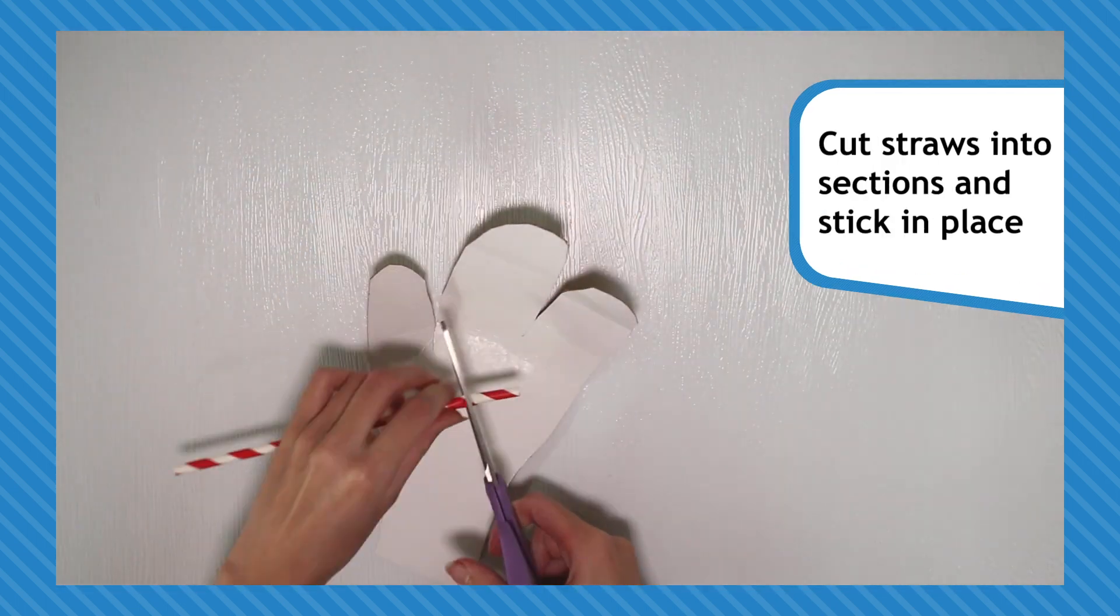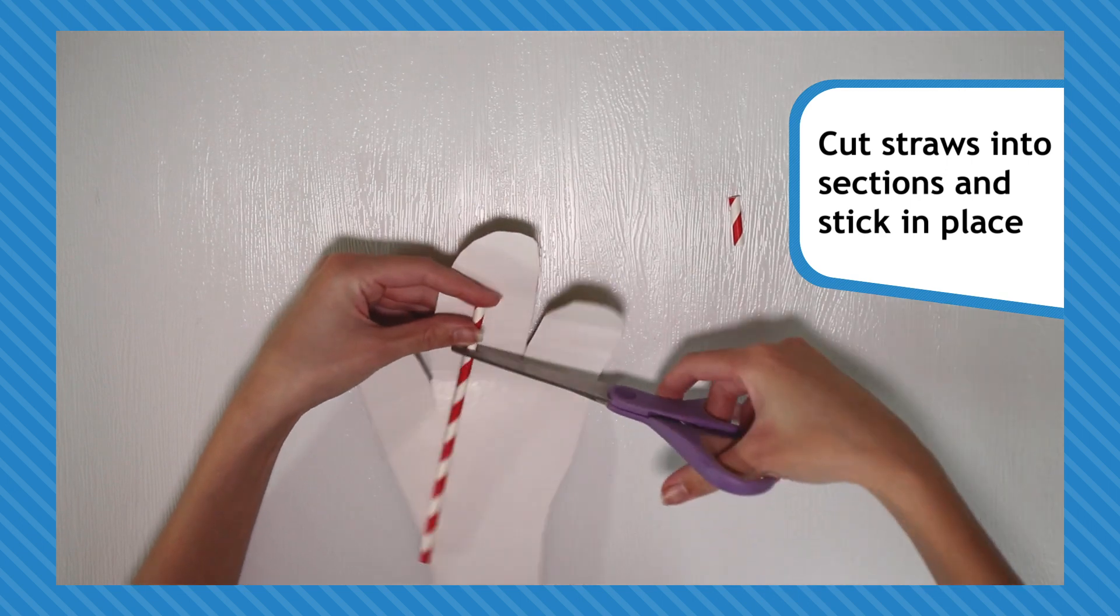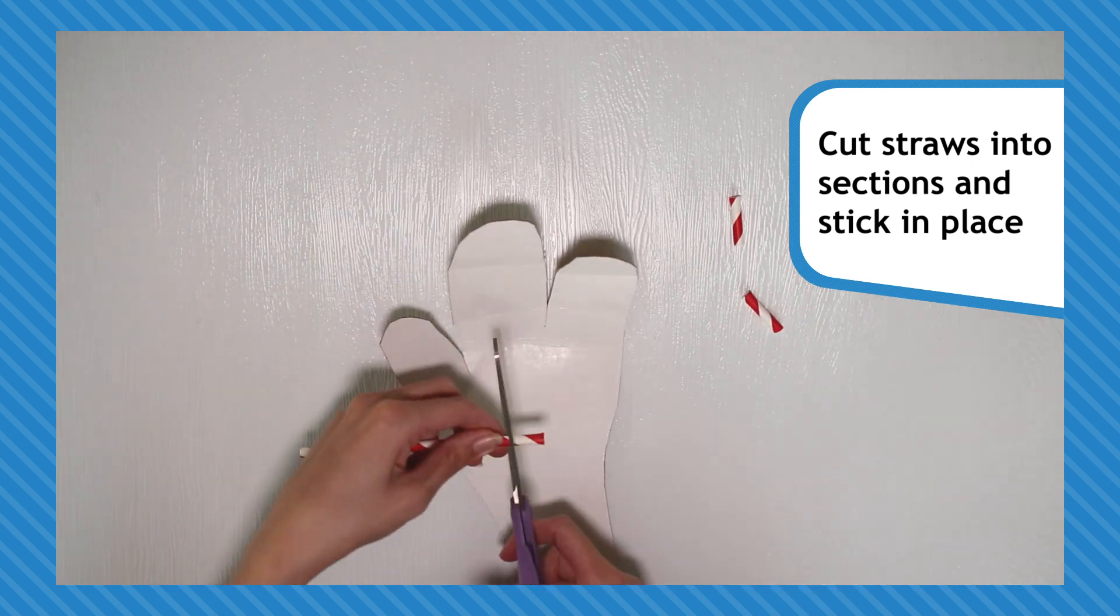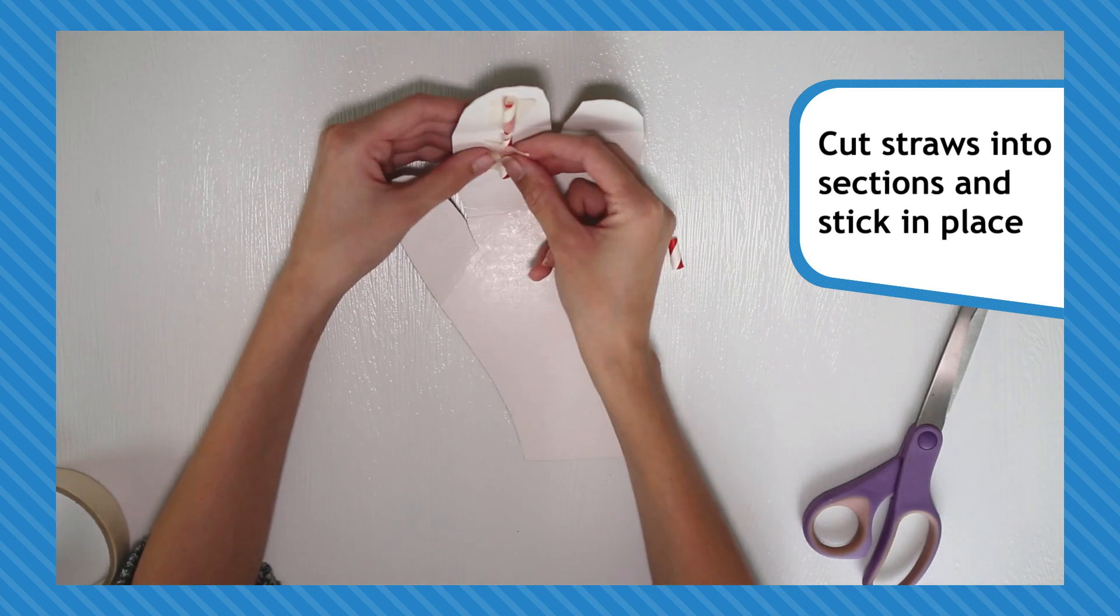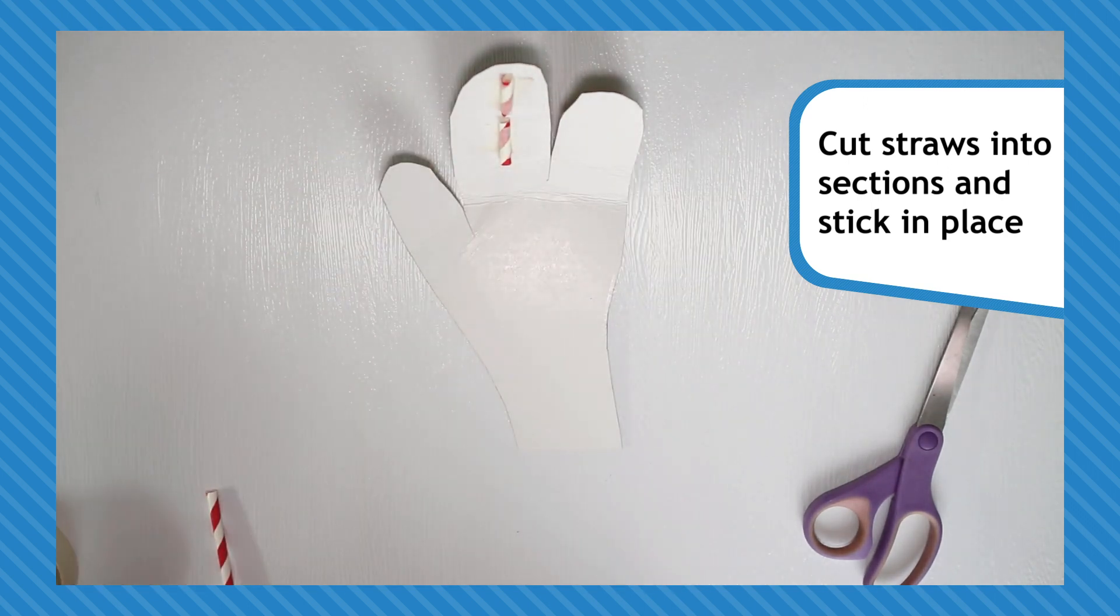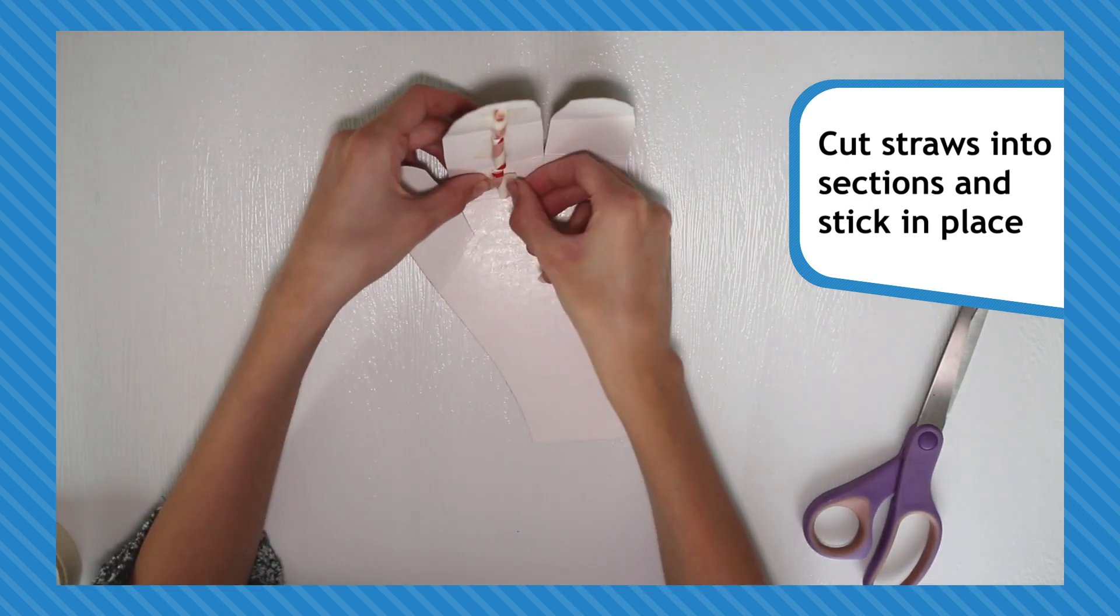Take a straw and cut it up into pieces smaller than the size of each section of your finger. Then stick them in place. Remember, if your straw pieces are too big your hand won't bend properly.